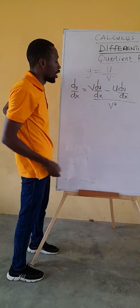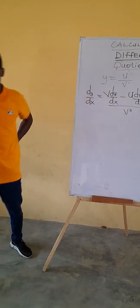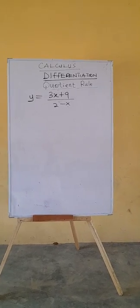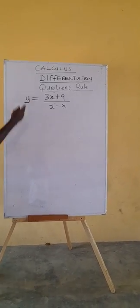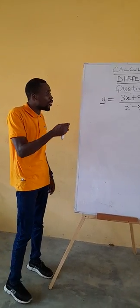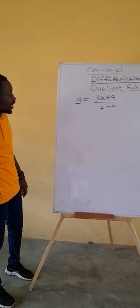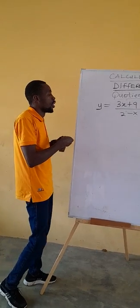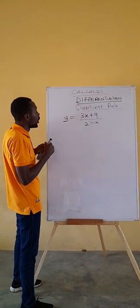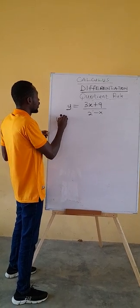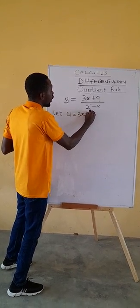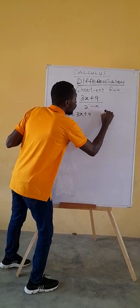There is a simple question on the board and we are going to try to use quotient rule to differentiate it. You can see there is a fraction with a numerator and denominator. So we let u be equal to the numerator, 3x plus 9, and v to be equal to